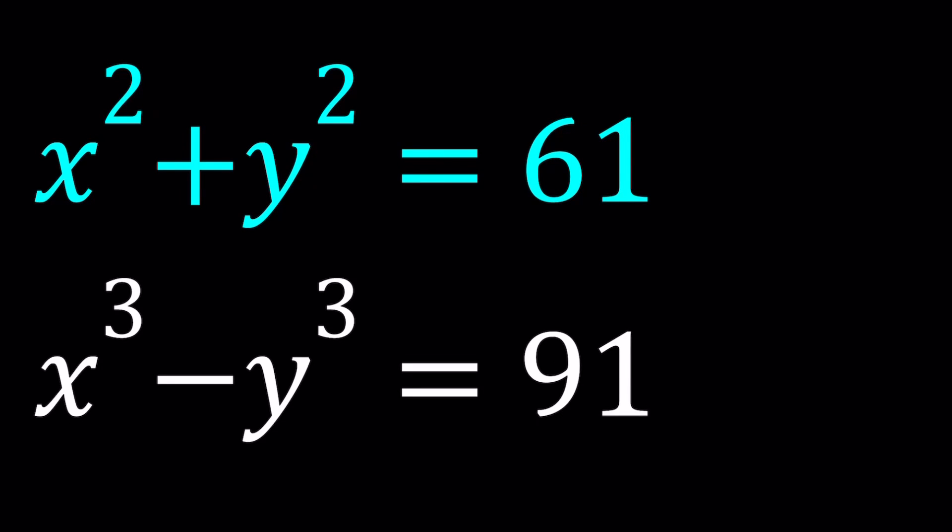Hello everyone. In this video, we're going to be solving an interesting polynomial system. We have x squared plus y squared equals 61, and x cubed minus y cubed equals 91.